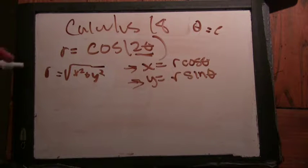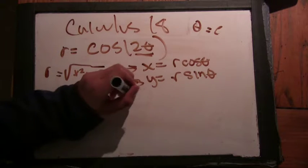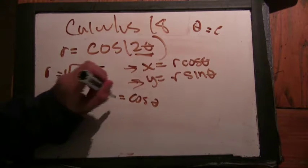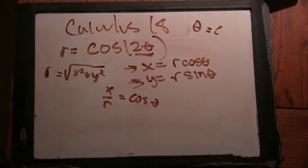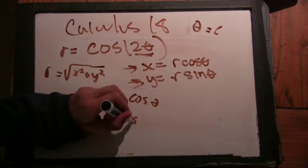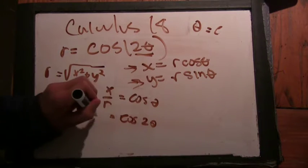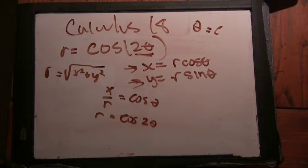Well, we know. So cosine θ is x/r. That's right. And maybe cos(2θ) equals r.